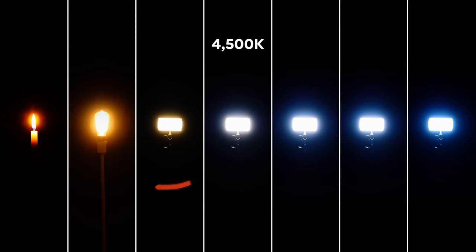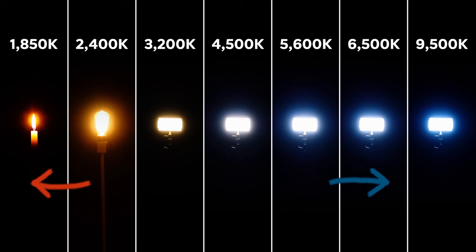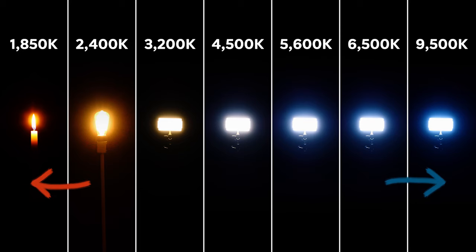Everything with a lower color temperature value will appear to be warmer and it will get progressively more and more orange the further away it gets from the white balance point. The same applies to sources with a higher color temperature value, which will get progressively cooler and more blue.